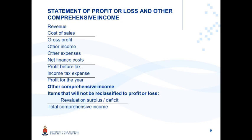In the Statement of Profit or Loss and Other Comprehensive Income, the presented line items Other Income and Other Expenses can be affected. Any revaluation surplus or deficits recognized through Other Comprehensive Income is indicated as a line item under this section. Note the specific heading: items that will not be reclassified to profit or loss, as being applicable to revaluation surplus and deficits through OCI.